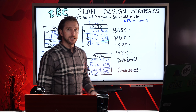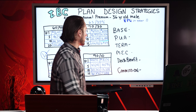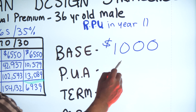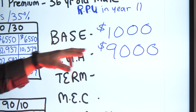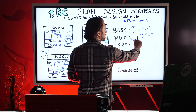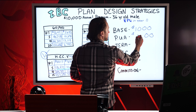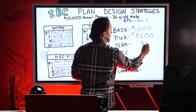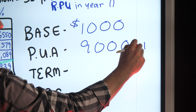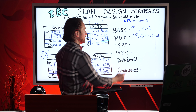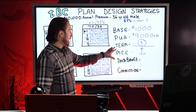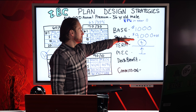Let's move on to the final contender: the 90-10. In the 90-10, the base gets $1,000. The remaining amount — roughly $9,000, though some goes to the term rider, let's say about $8,200 to paid-up additions and $800 to term — goes to paid-up additions. We need to add a term rider because we're building a plan with a very small base, and the IRS now says: you're starting to look a lot like an investment and a lot less like life insurance. To satisfy the MEC 7-pay rule, we just have to add term insurance.